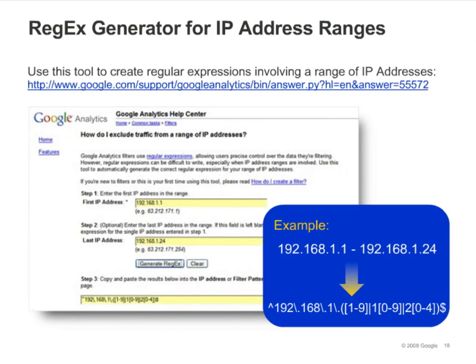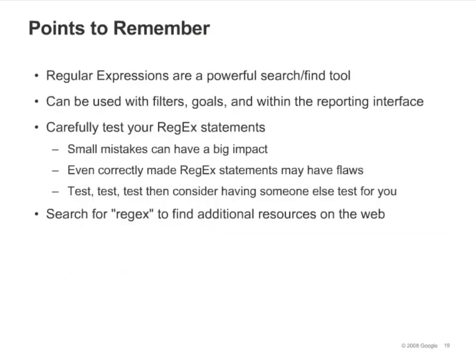Google Analytics provides a tool called the regular expression generator that makes it easier to generate a regular expression that matches a range of IP addresses. You can find it at the URL shown in the slide, or search for "regular expression generator" in the Google Analytics Help Center. You'll find many useful applications for regex as you use Google Analytics, but it's important to think through all the implications of each expression. It's easy to make a mistake and not get the data or result you're looking for. Set up a duplicate profile to test your regex statements, check your results after enough data has been collected, and always maintain a backup profile that includes all of your data. There are lots of regex resources on the web — to get started, just search for regex.